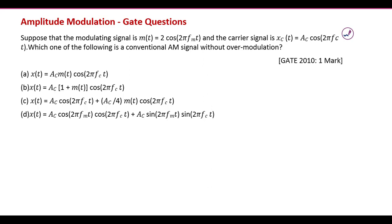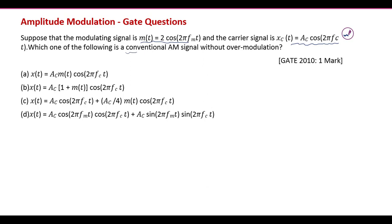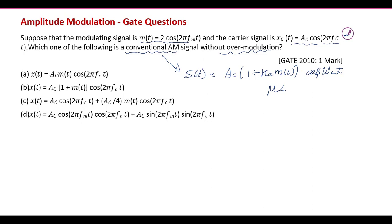The next question gives a modulating signal m(t) = 2cos(2πF_M t) and a carrier signal x_c(t) = A_C cos(2πF_C t). For conventional amplitude modulation, the general expression is x(t) = A_C [1 + K_A · m(t)] cos(ω_C t). Without over-modulation, the modulation index μ must be less than 1.